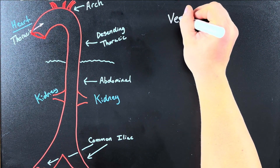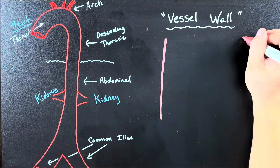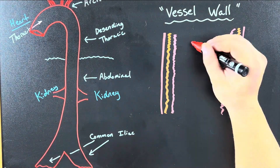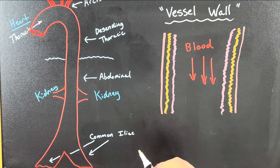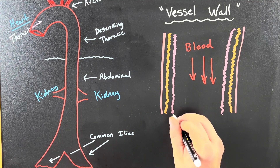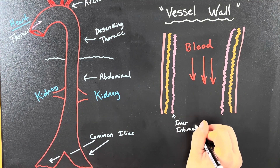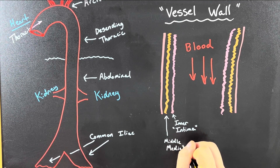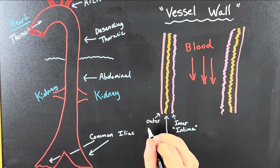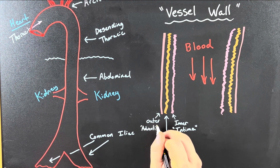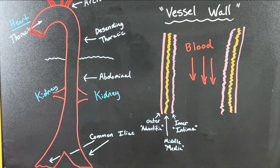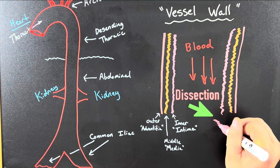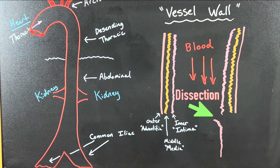If we were to take a microscope and look at the vessel walls themselves, you're going to notice there are three layers with blood in the middle. The inner layer is called the intima, the middle layer is called the media, and the outer layer is called the adventitia.